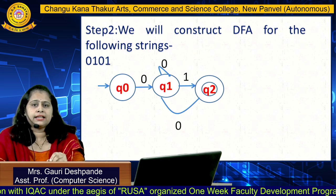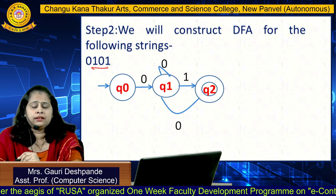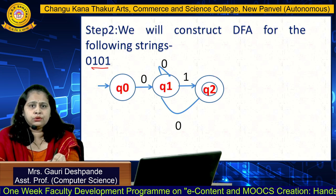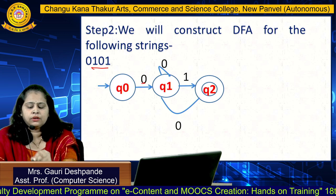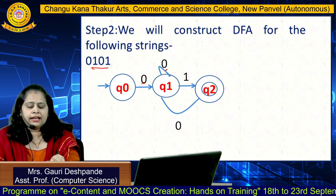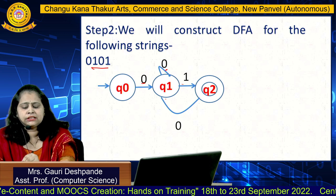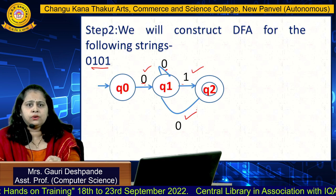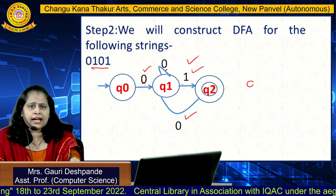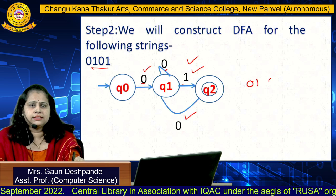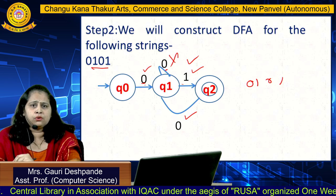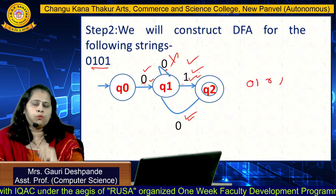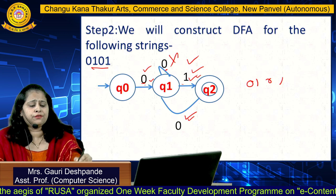For the third string '0101', again draw three states Q0, Q1, and Q2. Take the transition: Q0 on '0' goes to Q1, Q1 on '1' goes to Q2, Q2 on '0' goes back toward Q1, and then on '1' arrives at Q2. The transitions follow the sequence 0, 1, 0, 1. So Q2 can accept the string '0101'. In this way, the DFA is constructed for all three strings.